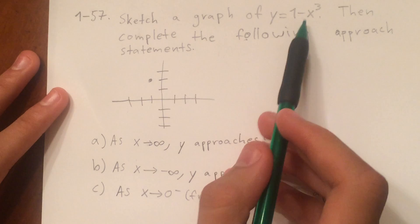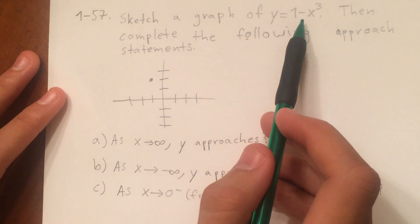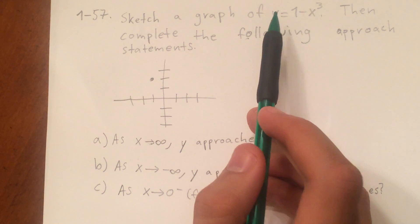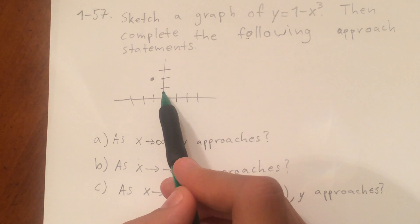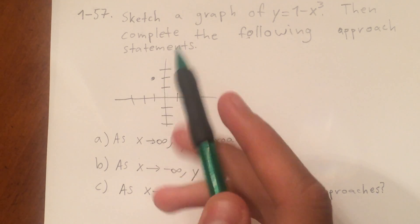When you plug in 0 for x, it's obviously going to be 1 minus 0. So the y coordinate at x equals 0 is 1.